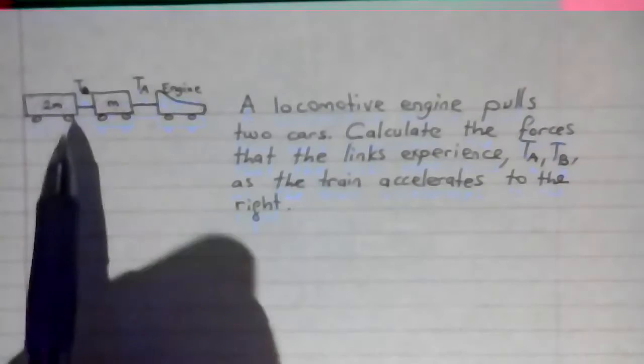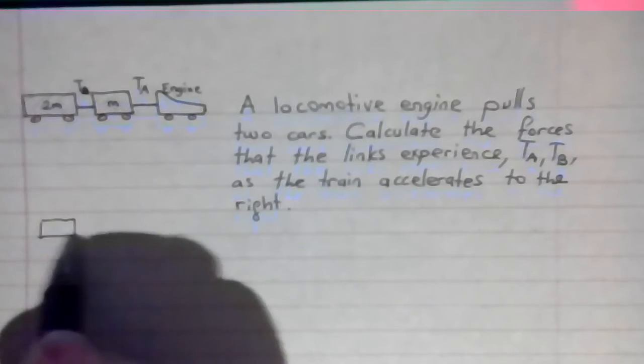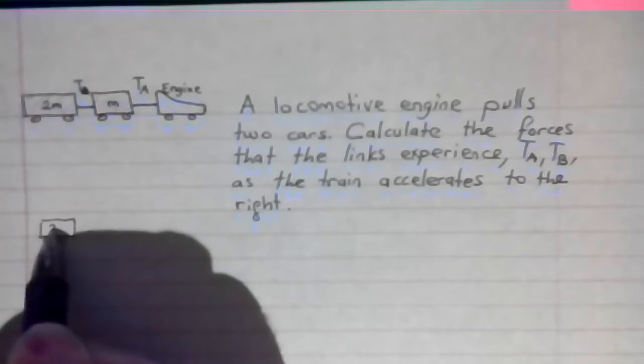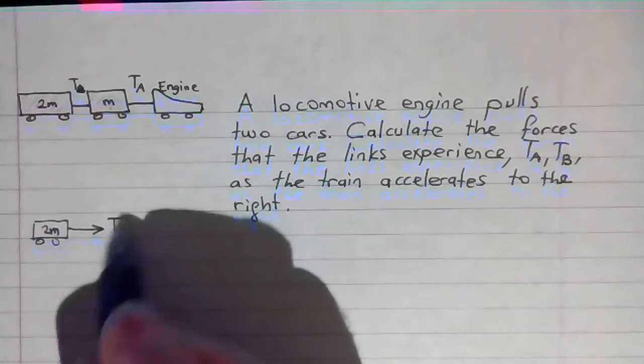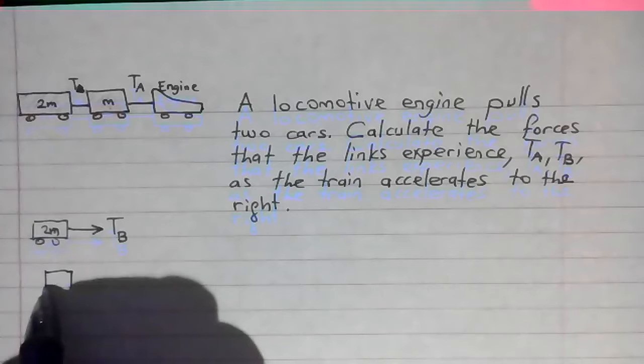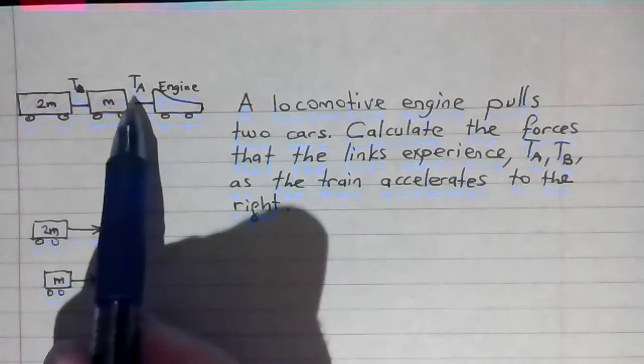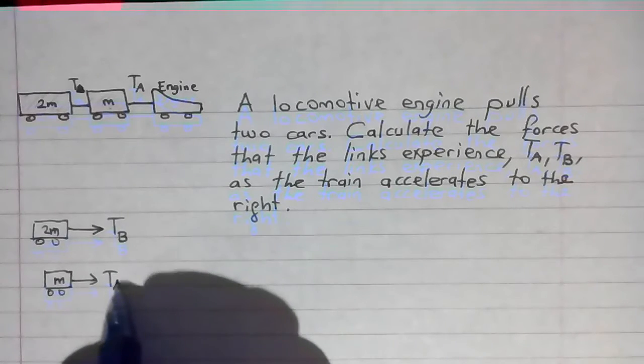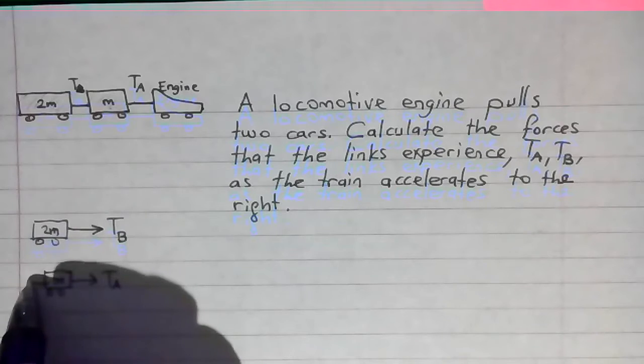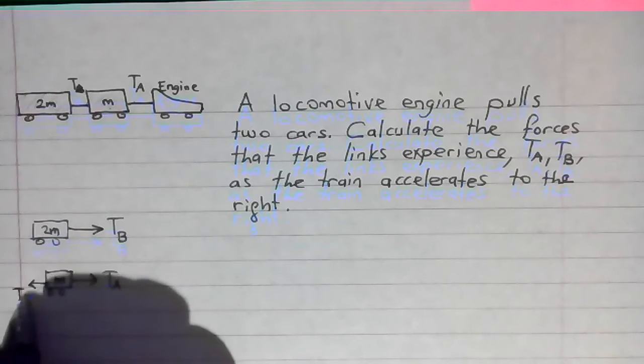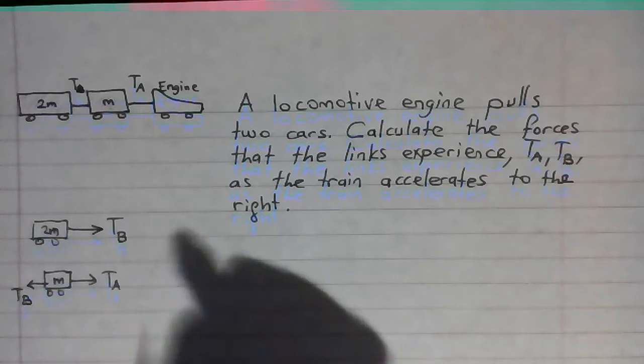First consider the 2M car. 2M is pulled by a force named TB. The first car, M, is pulled by a force called TA forward but at the same time a force called TB backward.